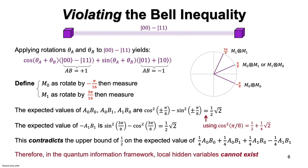The average would exceed the bound of one half that was derived under the assumption of local hidden variables. Therefore, in the quantum information framework, local hidden variables cannot exist.